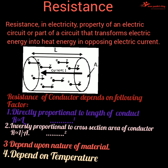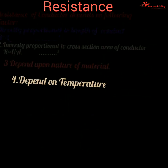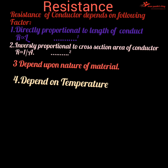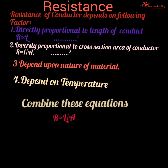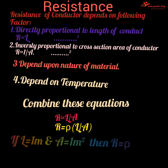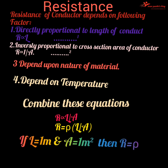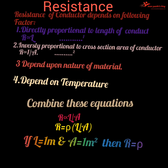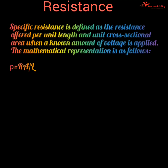Resistance also depends on the nature of the material and on temperature. If length L = 1 and area = 1 m², then R = ρ. Specific resistance or resistivity of a material is the resistance offered by a 1-meter length conductor having a cross-sectional area of 1 m².